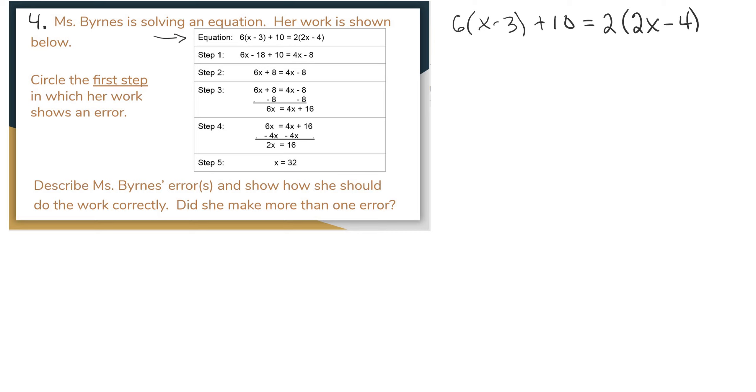Okay, so now I'm going to distribute, I'm going to multiply this 6 on the outside to everything on the inside. So it's going to be to both the x and the 3. So 6 times x is 6x. 6 times negative 3 is negative 18. And then we still have the 10.